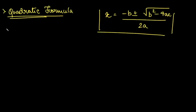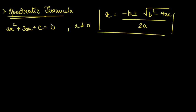We know that the general form of a quadratic equation is ax squared plus bx plus c is equal to 0, where a is not equal to 0. If a equals 0 it will turn into a linear equation. We are equating this to 0 because we want to find the roots of the equation. Roots are the values of the variable for which the equation will equate to 0.